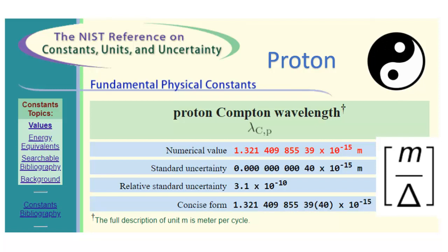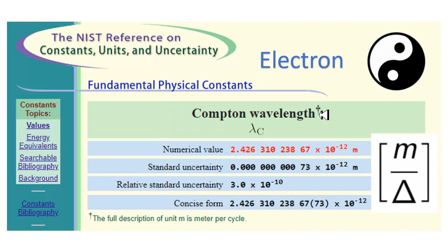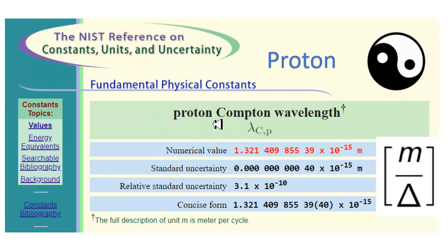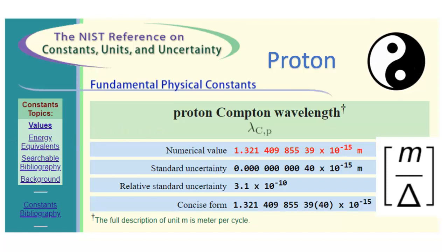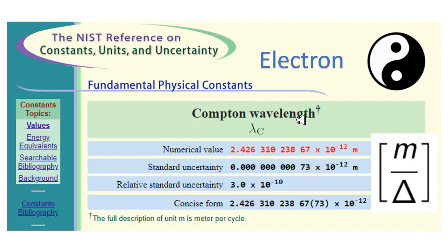I find it interesting that the NIST standard refers to the Compton wavelength of the electron as just 'the Compton wavelength,' but refers to the proton's as 'the proton Compton wavelength.' For completeness and consistency, since this is a standard, they should follow a standard. The electron's should be called the electron Compton wavelength, and of course that is what I will be doing in my teachings.